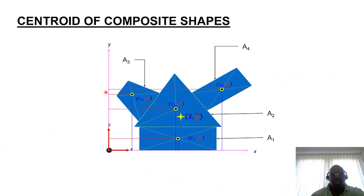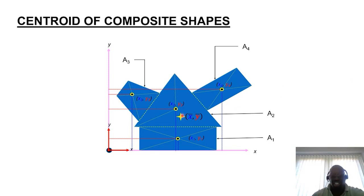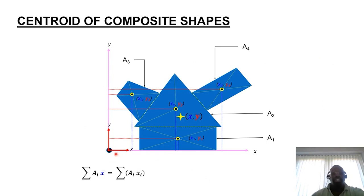Once you've measured and identified the coordinates for all the individual shapes, you're now ready to calculate or predict where the universal coordinates are for the entire shape — where all the masses or areas are concentrated. This represents the global coordinates of the central position of the given shape. We're going to use this equation — a simplified variant of what I showed you previously.